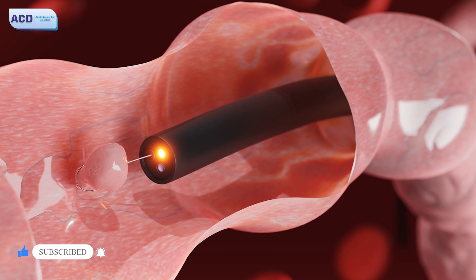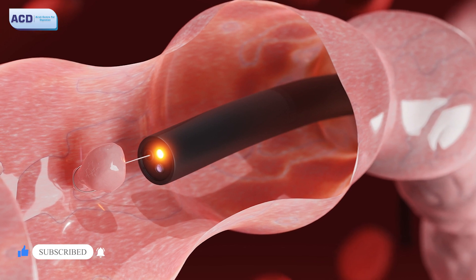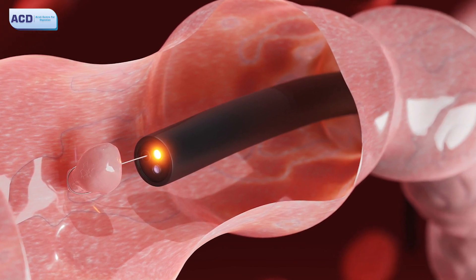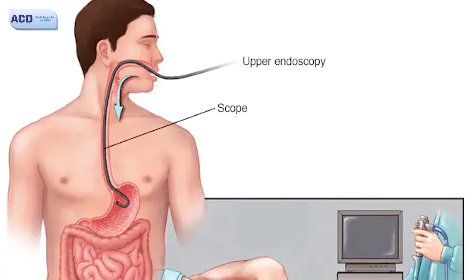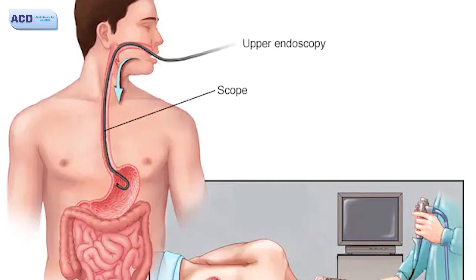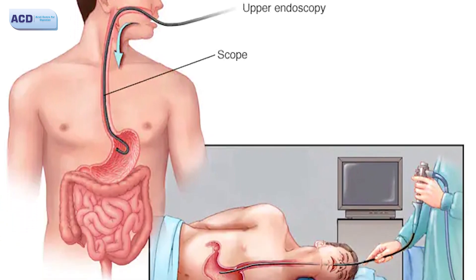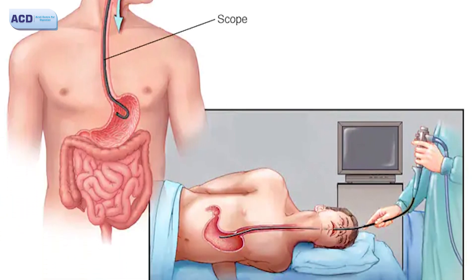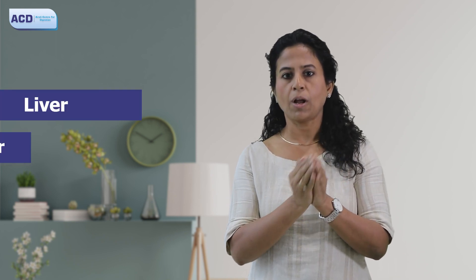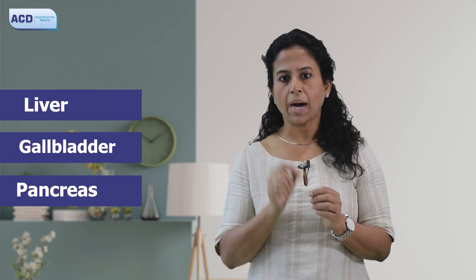Now what is endoscopic ultrasound? Whenever there is an endoscope, a camera is attached to it along with a small microchip of sonography. We sedate the patient, put it inside through the mouth, and place the sonography machine — which is a microchip — inside the stomach, through which we examine areas around the stomach like liver, gall bladder, pancreas, and bile duct.